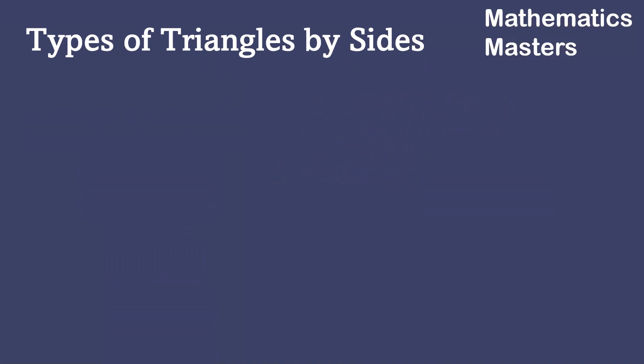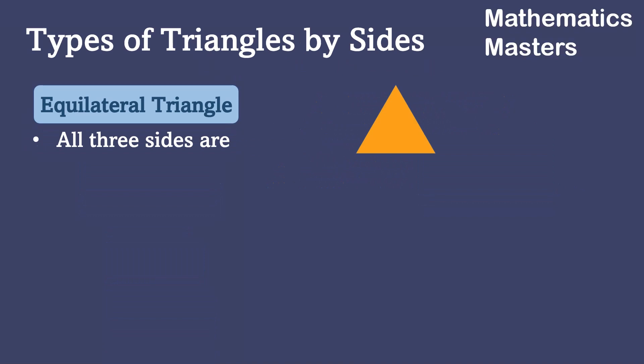Triangles are classified into three types on the basis of sides. The first one is equilateral triangle. The equilateral triangle is a triangle in which all the three sides are equal.